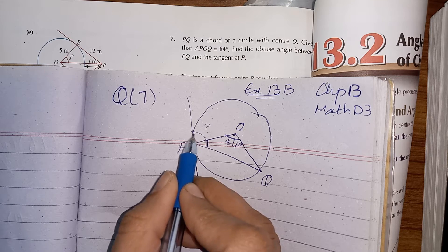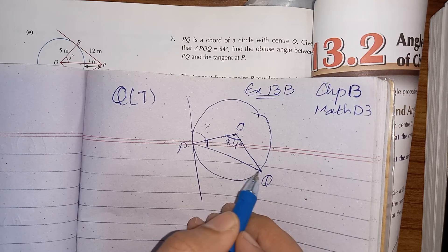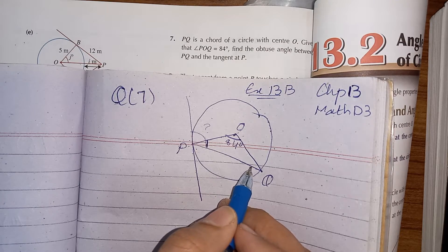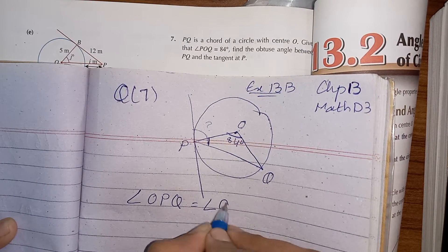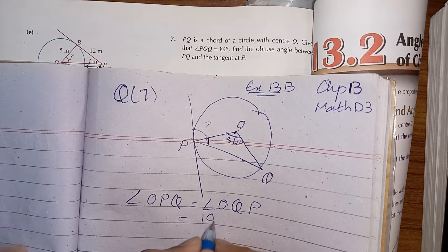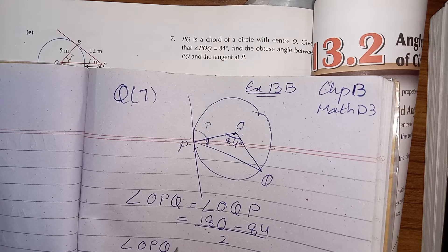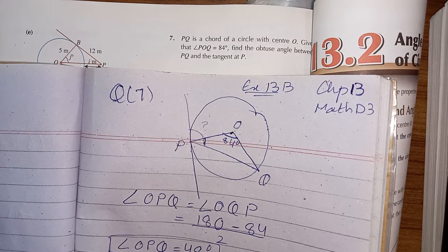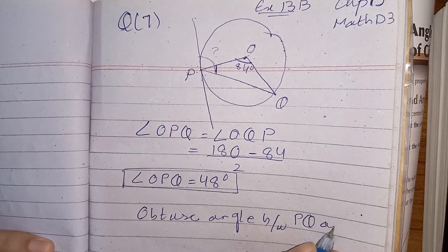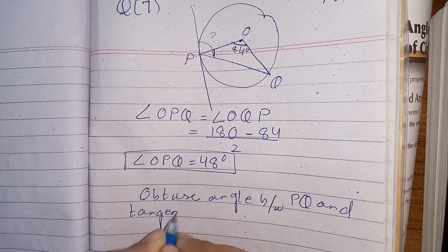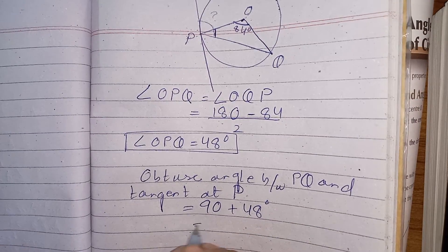In triangle OPQ, OP and OQ are radii of the circle, so this is an isosceles triangle. Therefore angle OPQ equals angle OQP, which gives us (180 − 84) ÷ 2 = 48 degrees. The obtuse angle between PQ and the tangent at P is 90 + 48 = 138 degrees.